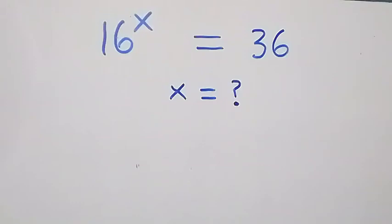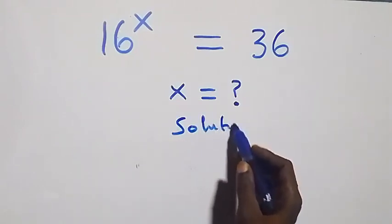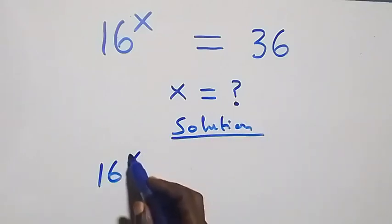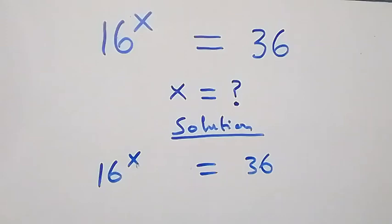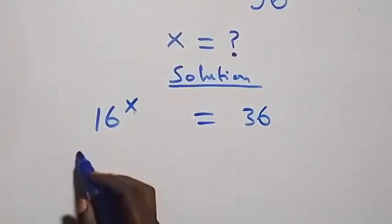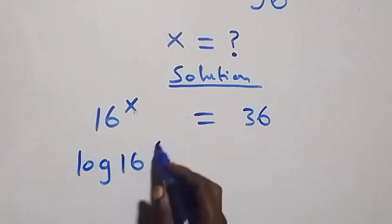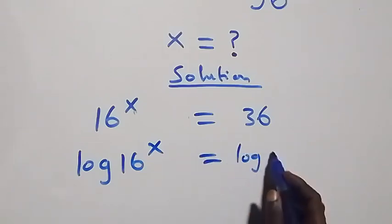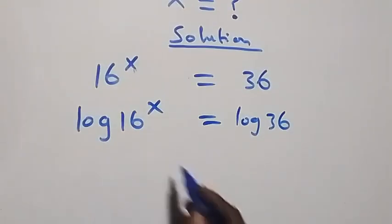Hello, you are welcome. How to solve this nice exponential problem. From what is given, which is 16 raised to power x equals to 36. Let's take the log on both sides, then we have log 16 raised to power x equals to log 36 on this side.